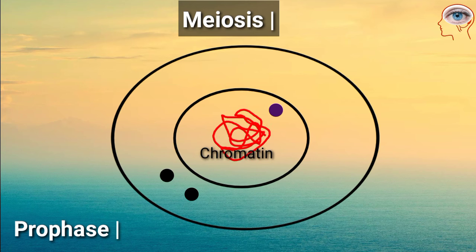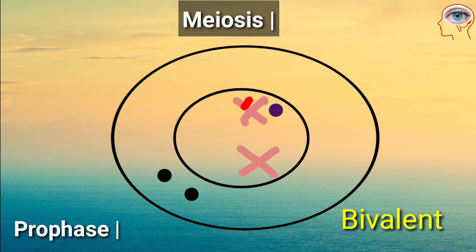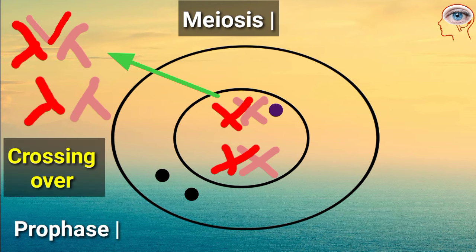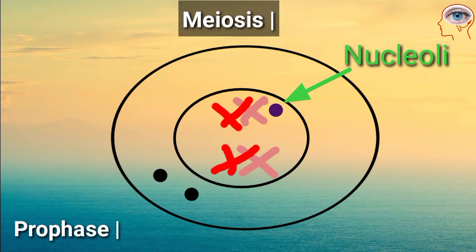In prophase 1, chromatin condenses into chromosomes. The homologous chromosomes line up to form pairs called bivalents. The two non-sister chromatids of the pair exchange their segments, which is called crossing over. Chromosomes further condense.